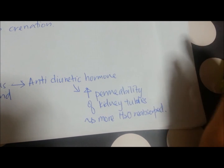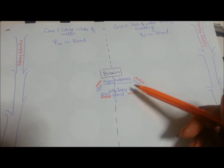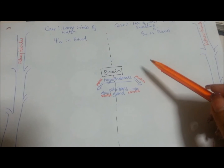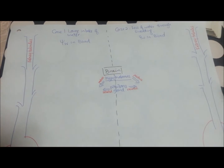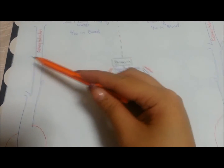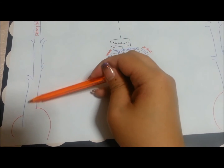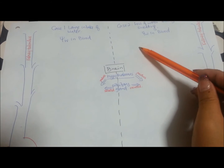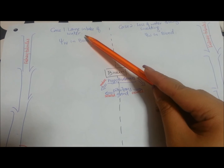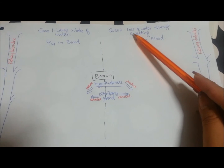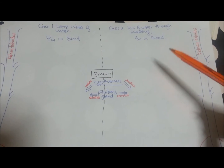Now let us take a look at the process by which it happens — how the kidney, the brain, the hypothalamus, the pituitary gland, and ADH work together to help us osmoregulate the water potential in the blood. I have drawn the kidney tubules on this page, which lead towards the bladder, so whatever remains inside the tube will form part of the urine. I have divided the page into two: on the left, we discuss what happens when you have a high intake of water; and in case two, what happens during exercise when you lose a lot of water.